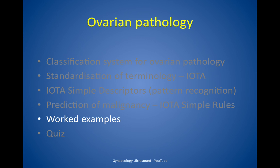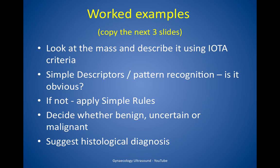Here are some examples for how to apply this. You should describe the mass first using IOTA criteria, look to see whether any simple descriptors apply, and if not then apply simple rules. Decide whether the mass is benign, uncertain or malignant and suggest histology.